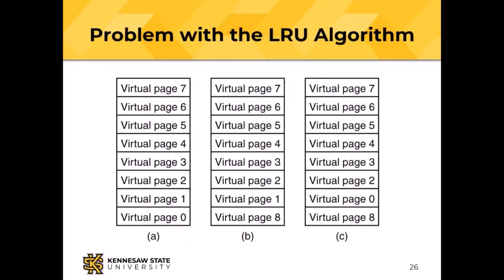Here's a problem with least recently used: I've got pages 0 through 7 in memory, the next page I need is page 8. Page 0 was least recently used, so it gets evicted and virtual page 8 gets loaded. But now I need virtual page 0 again — now page 1 gets evicted, then I'll need that, and so on. I am moving pages back and forth unnecessarily. So we probably do something like least frequently used instead.